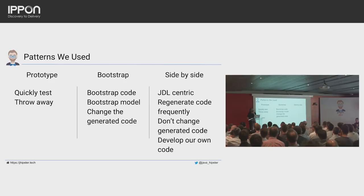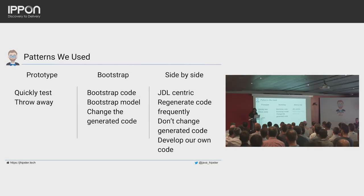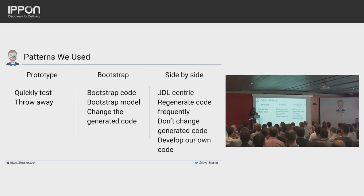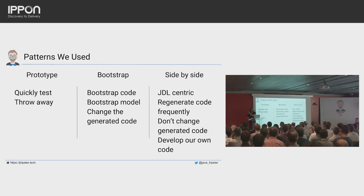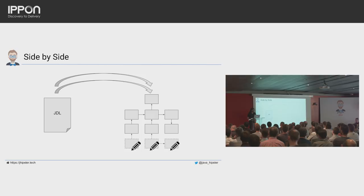For the two last projects — slightly bigger — we were prototyping new approaches and came up with what we call the side-by-side. The idea is very JDL-centric: we change the JDL, we regenerate the code quite frequently both technically and for business, and we don't change the generated code. We only change things in two very tiny areas. The key idea: you don't change the generated code, but you develop your own code side-by-side. JHipster generates all the business and technical classes, and we create our own — either truly on the side or by extending JHipster's generated classes.